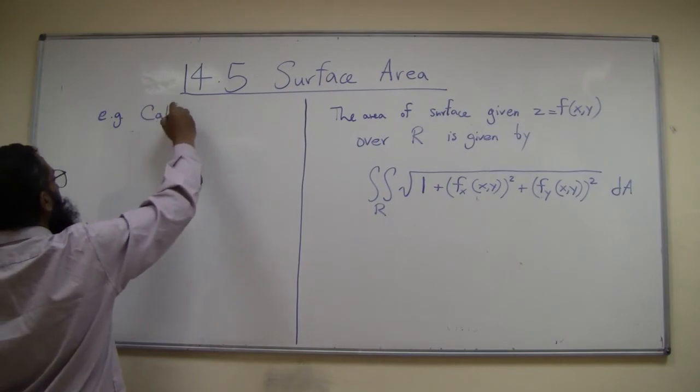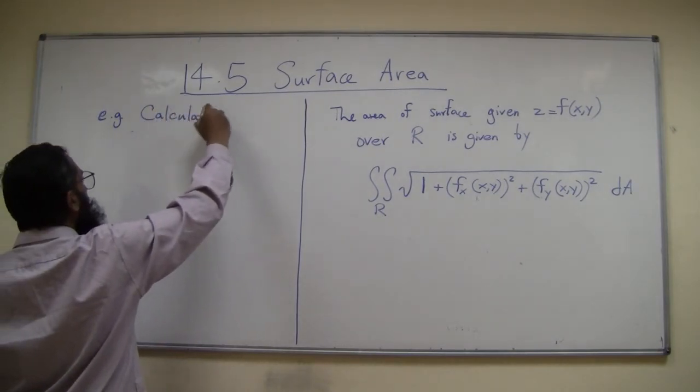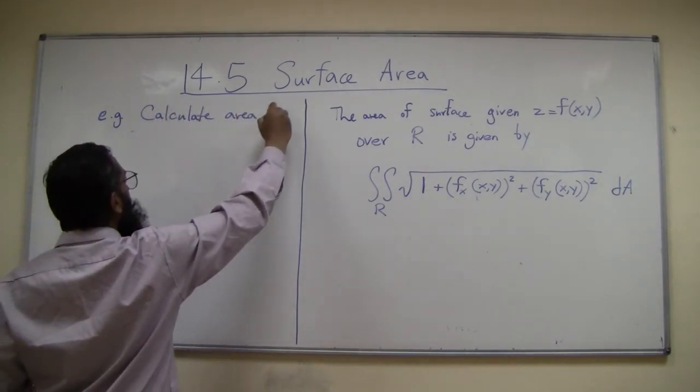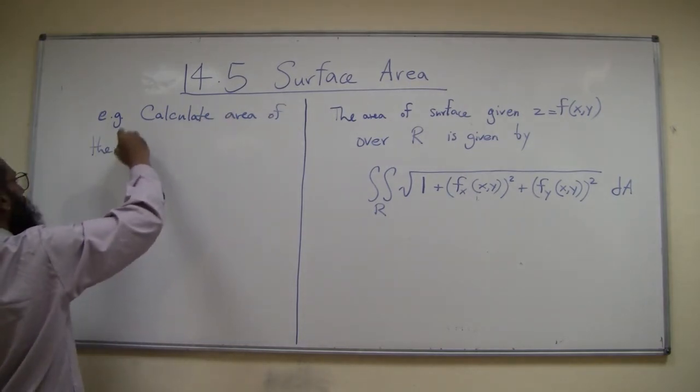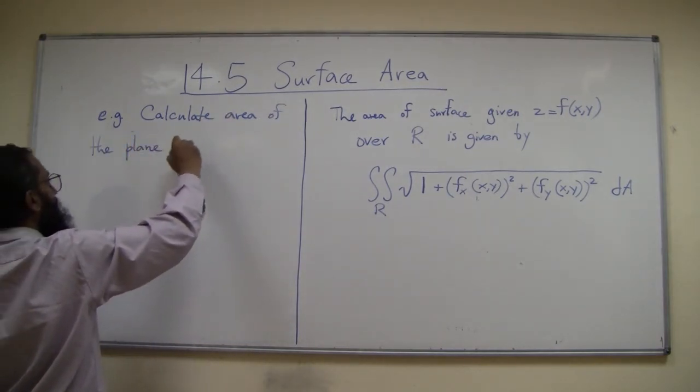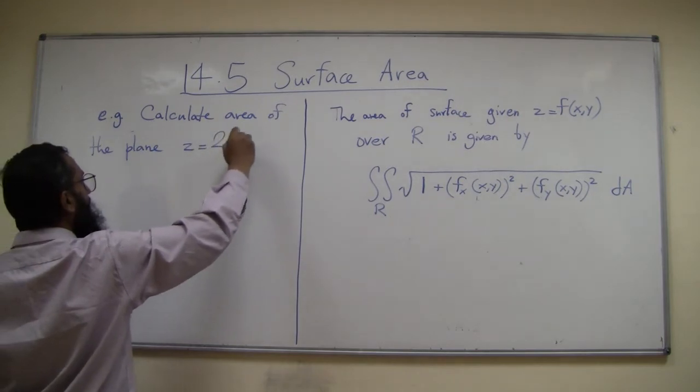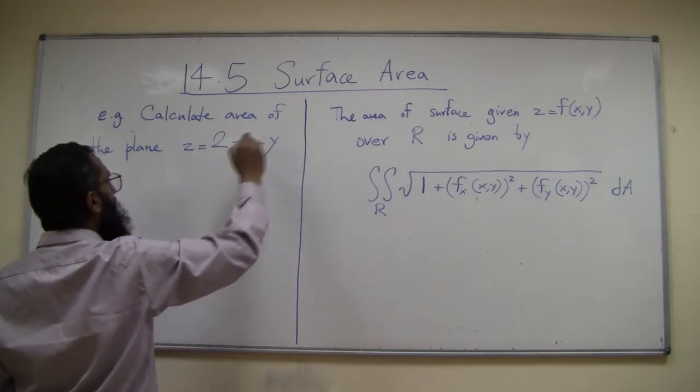Calculate area of the plane z equal to 2 minus x minus y.